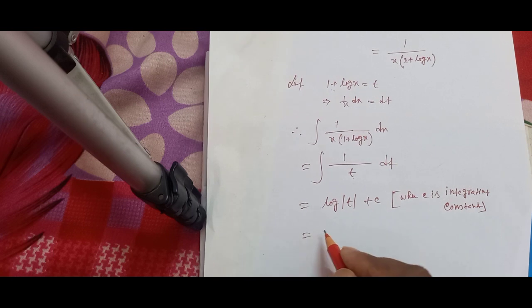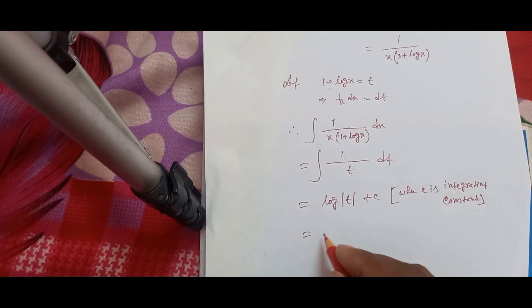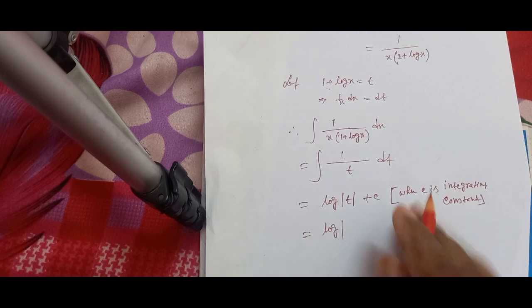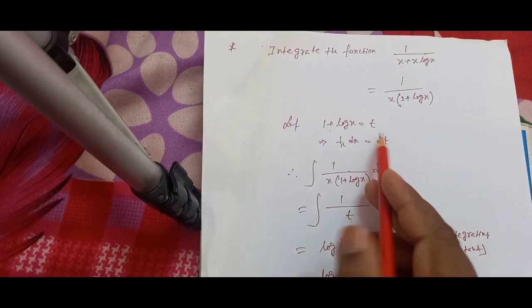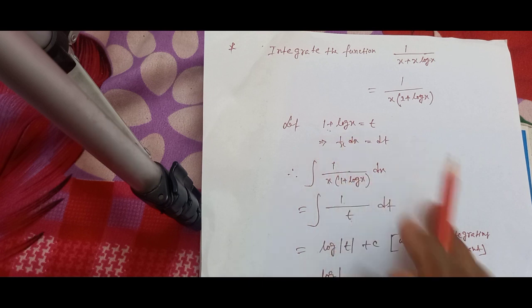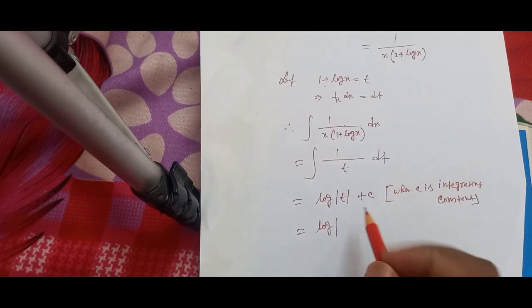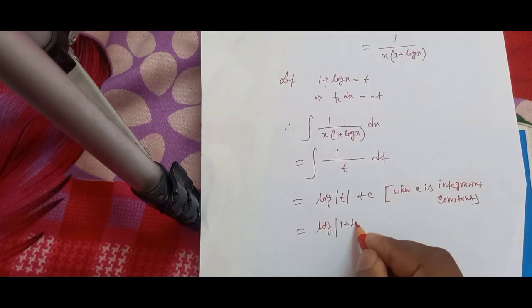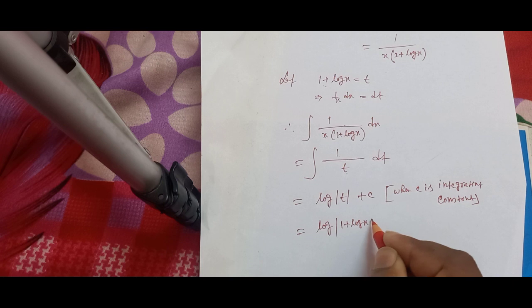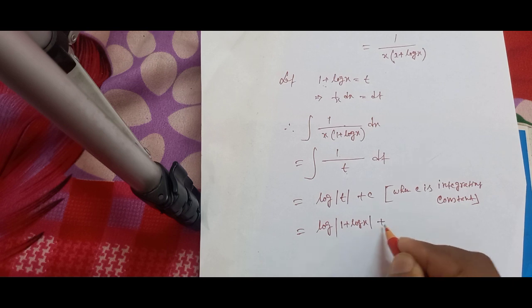Putting back the value of t, we get the final answer: log|1 + log x| plus c.